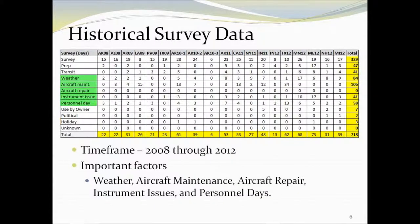To assist with this issue, we will first look at the historical data. The table is broken down by individual surveys in the columns and the particular process or delay in the rows. Each number represents the amount of days that each survey spent performing a particular task or waiting due to a delay. The important factors that we will focus on are aircraft maintenance, aircraft repair, equipment repair, weather delay, and personnel days.